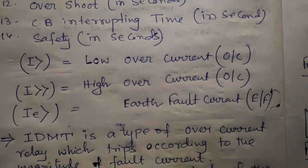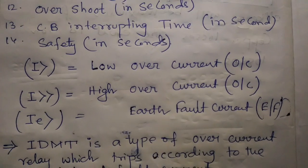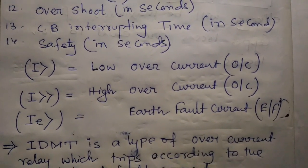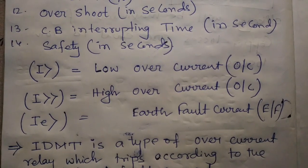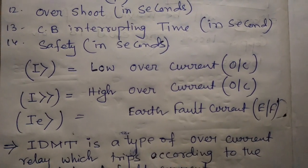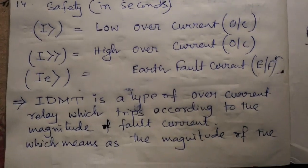Where I> equals low overcurrent, I>> equals high overcurrent, and Ie> equals earth fault current.